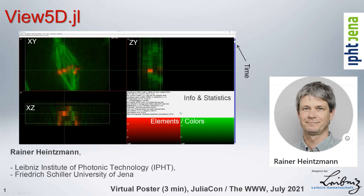As you can see, it can display up to five-dimensional data. You have here what is called elements of color, and here you have the time direction, and then you have these orthogonal collected views. When you're dragging this crosshair around, you will see all of these views updating.